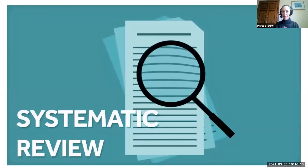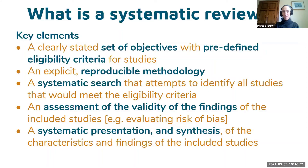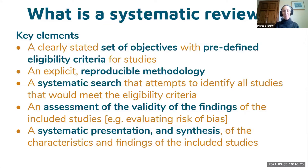So what is a systematic review? As its name says, the important thing is that it is systematic - it has a clearly stated set of objectives with predefined eligibility criteria for studies, a reproducible methodology, and a systematic search. You don't search random keywords; you find a structured systematic way of looking for keywords. Then you assess the validity of the studies including the risk of bias, and do a systematic presentation and synthesis of the characteristics and findings of the included studies.